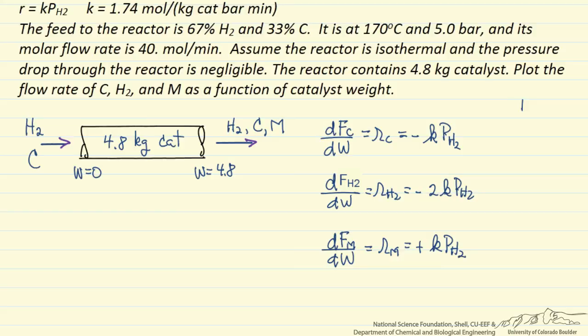Now these are initial value differential equations that we are solving which means we need the initial values: Fc0, Fh0 for H2, and Fm0. Well there is no M coming in so this is 0. The feed total of 40 moles, so 33% times 40 is the molar flow rate of C coming in and 0.67 times 40 is the molar flow rate of hydrogen.